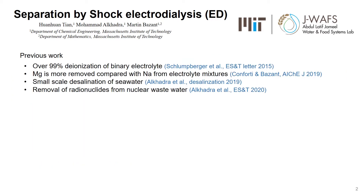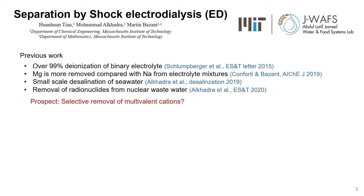In 2015, Schlenberg et al. first proved that shock ED can remove over 99% of some binary electrolytes. Later on, Conforti showed that magnesium can be more removed compared with sodium from electrolyte mixtures. Then, Alkuhydri et al. showed that shock ED can desalinate seawater and effectively remove radionuclides from nuclear wastewater. These experiments show that certain ions, especially multivalent cations, tend to be more removed from electrolyte mixtures. The outlet concentration can differ tenfold.